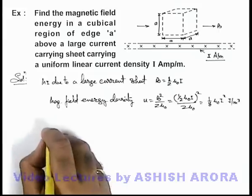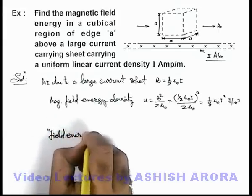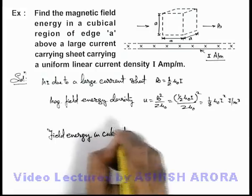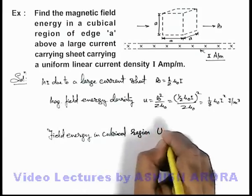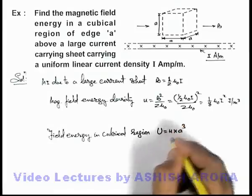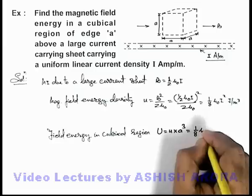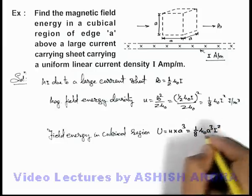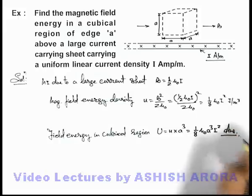So we can directly calculate now the field energy in cubical region. This can be given as U equals small u multiplied by the volume of region, which is a cube. So this can be written as 1/8 μ₀a³I². This will be measured in joule for SI units, and that will be the answer to this problem. Thank you very much.